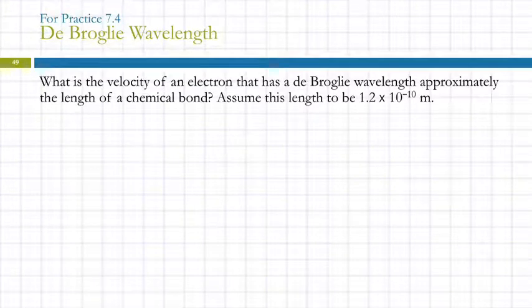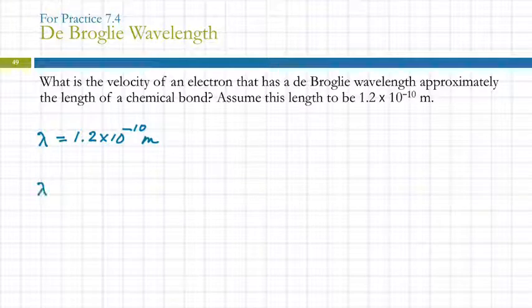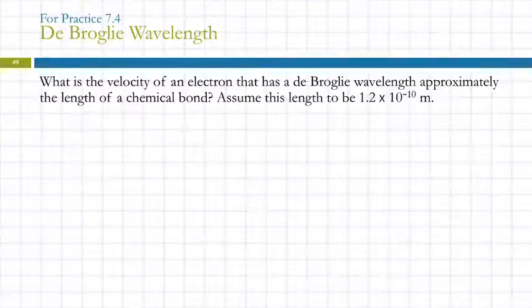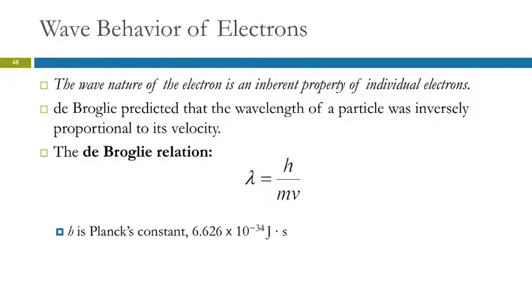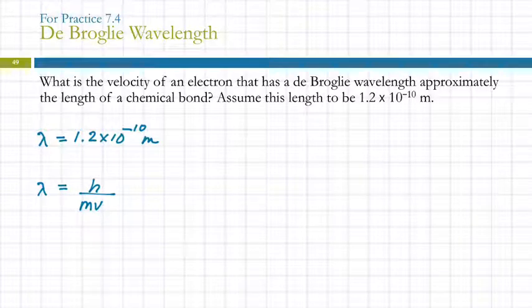So we can do calculations with this. What's the velocity of an electron that has a de Broglie wavelength approximately the length of a chemical bond? Which is about 1.2 times 10 to the minus 10 meters. So the wavelength is 1.2 times 10 to the minus 10 meters. Our de Broglie wavelength relation said that the wavelength was equal to h divided by the mass times the velocity. And let's go back and check that. Yeah.